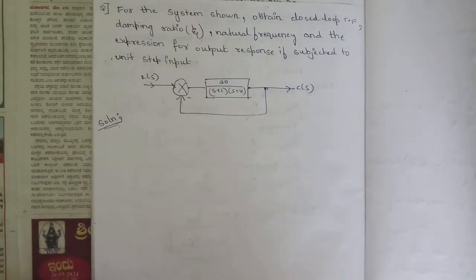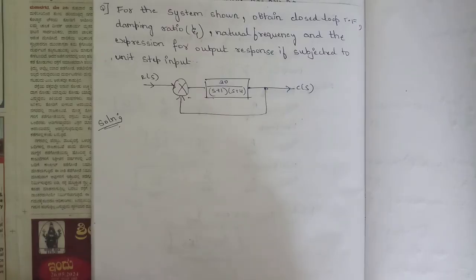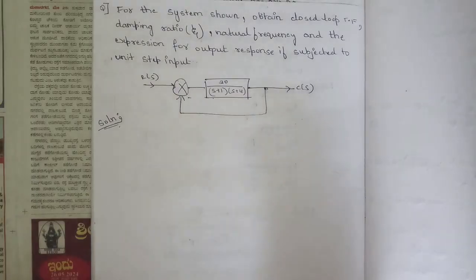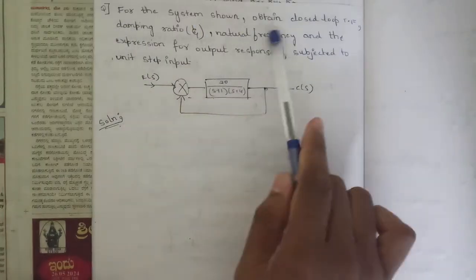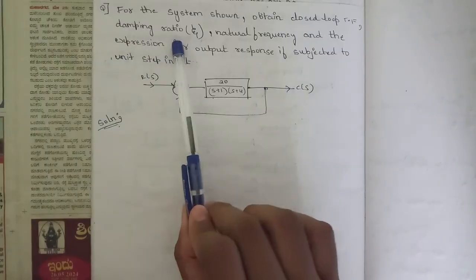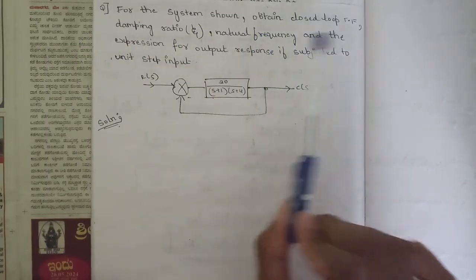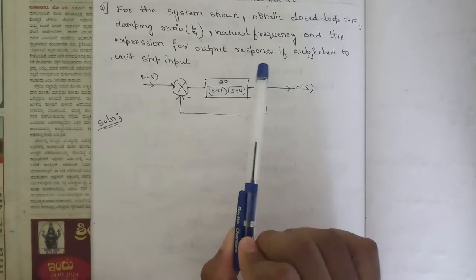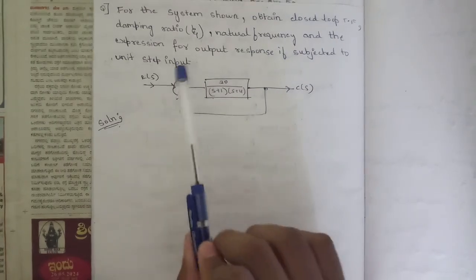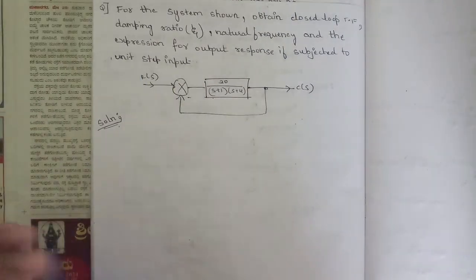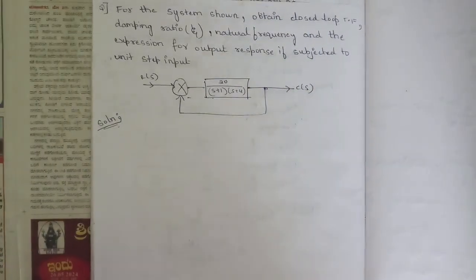Hello everyone, welcome to this session. In the last session we saw few important derivations of the time domain specifications. In this session we are going to discuss two problems related to time domain specifications. The first question is: for the system shown, obtain the closed loop transfer function, damping ratio, natural frequency, and the expression for output response c(t) if subjected to unit step input.